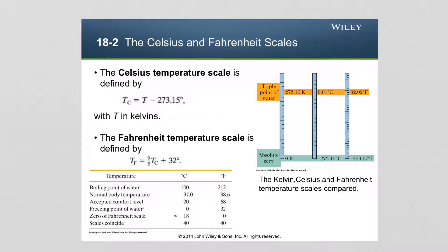On the Kelvin scale, the triple point of water is 273.16 Kelvin, corresponding to 0.01 degrees Celsius and 32.02 degrees Fahrenheit. Absolute zero is 0 Kelvin, which equals minus 273.15 degrees Celsius and minus 459.67 degrees Fahrenheit.